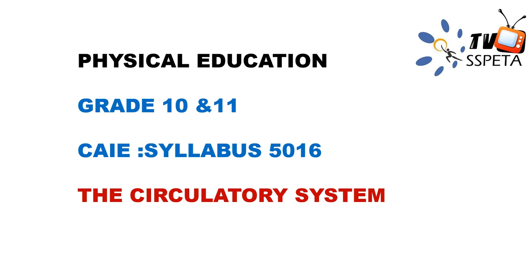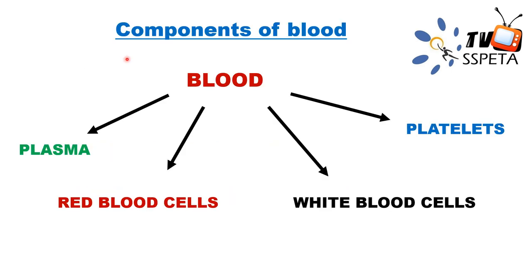Hello everyone. Today's topic is the circulatory system for Grade 10 and 11. We start with the components of blood. Blood is made up of plasma, red blood cells, white blood cells, and platelets. These are the four main components of blood.